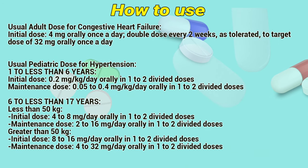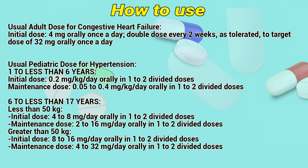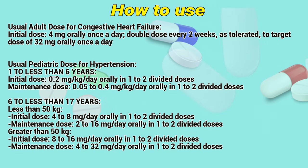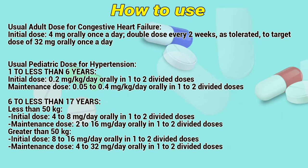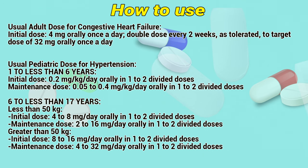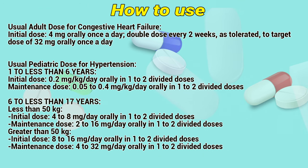Initial dose for congestive heart failure — 4 mg orally once a day. Double the dose every 2 weeks as tolerated, up to the target dose of 32 mg orally once a day.